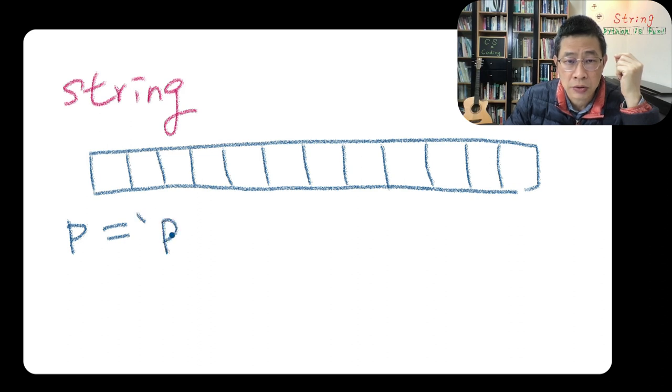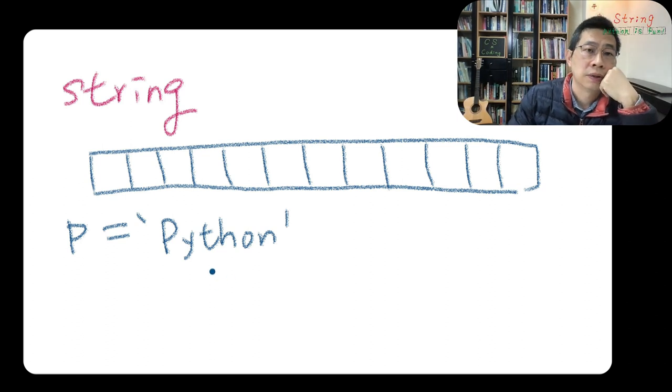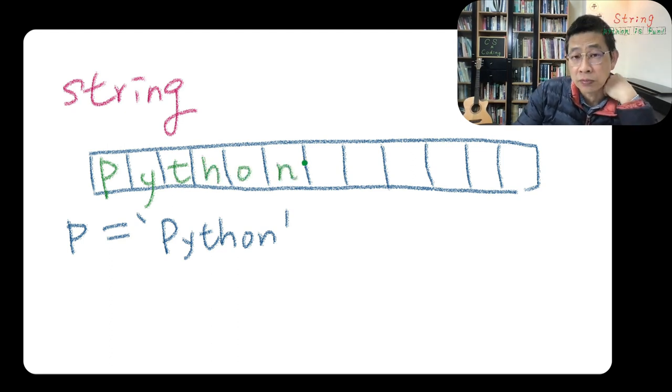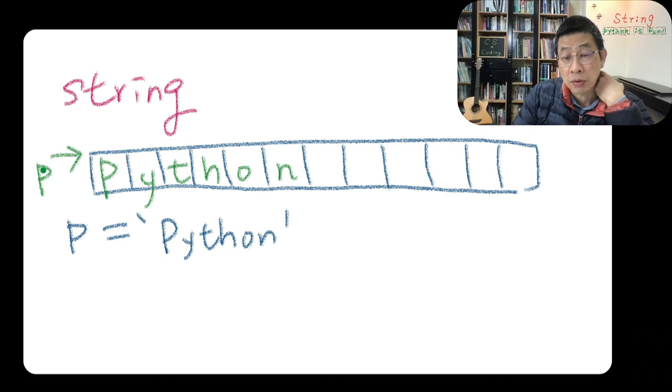Internally in memory somewhere, you don't need to worry that much, P-Y-T-H-O-N will have a memory location and they will just put it there, and your P, your program, can have a reference to this memory address.